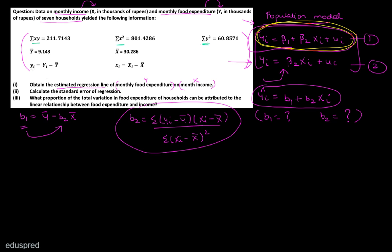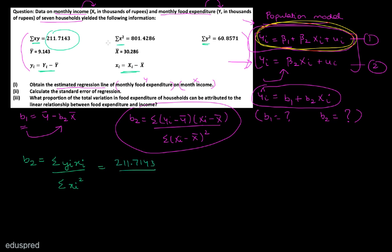Notice that most of the information is given in lowercase letters. We are given that small yi is equal to capital Yi minus Y bar, and small xi is equal to capital Xi minus X bar. Using these notations, the formula to calculate B2 is summation of small yi multiplied with small xi divided by summation of small xi square. We are given that summation of small xi times yi is 211.7143, so the numerator is 211.7143. And summation of small xi square is 801.4286, so the denominator is 801.4286. Dividing these two gives B2 equal to 0.2641.